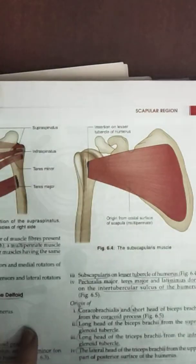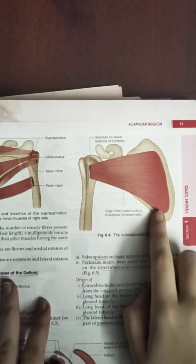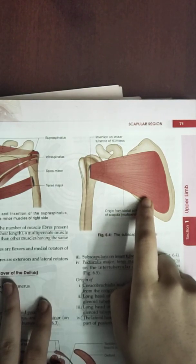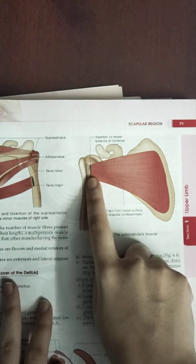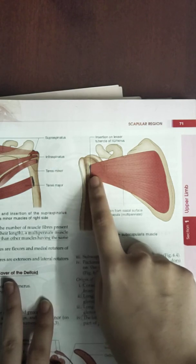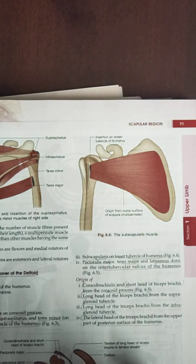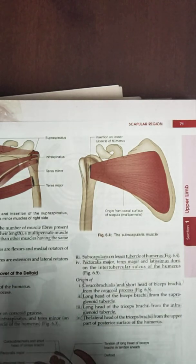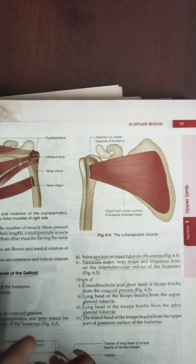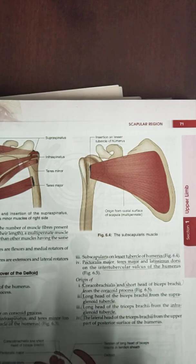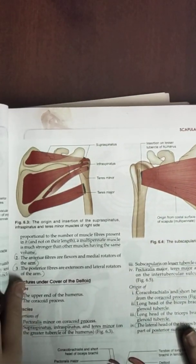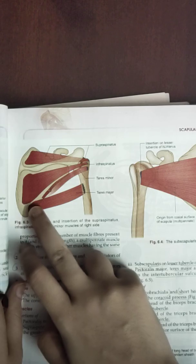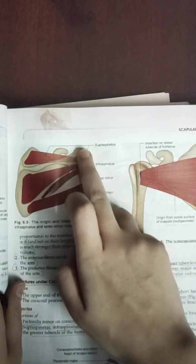Now let's talk about the subscapularis. The subscapularis originates from the subscapular fossa and is inserted into the lesser tubercle of the humerus, which is on the anterior side. So the four muscles forming the rotator cuff are: supraspinatus, infraspinatus, teres minor, and subscapularis — all inserting into the greater or lesser tubercle. Teres major is excluded as it inserts into the bicipital groove.